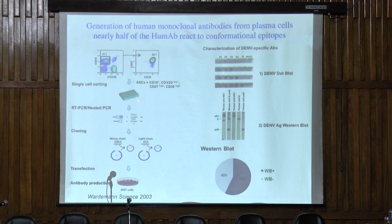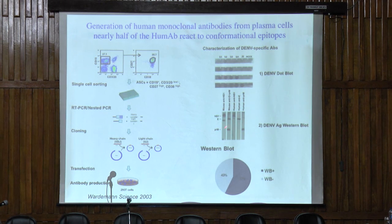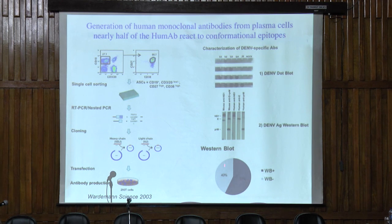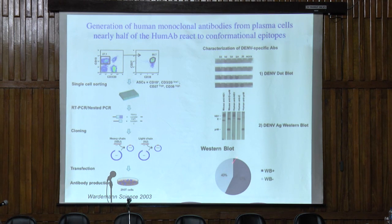We get antibodies that we can then screen for reactivity against dengue. In this experiment, we made about 150 antibodies against dengue virus surface proteins. We screened them by Western blot, finding antibodies that react against pre-M and antibodies that react to the envelope protein. But we also found a large number of antibodies that did not react at all on Western blot, but only reacted to the envelope protein when it was present on the intact virus particle. They only recognize intact virus — not monomeric or denatured protein — so we were very curious to find out whether they were potent at neutralization.